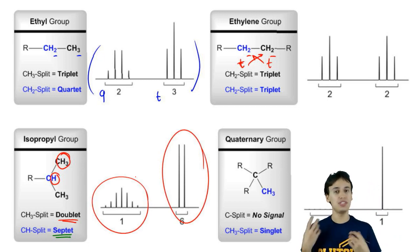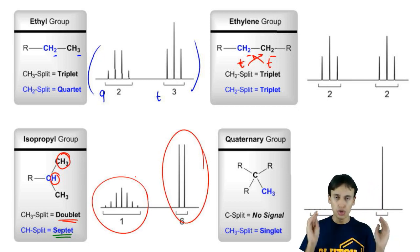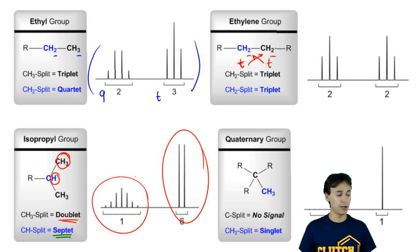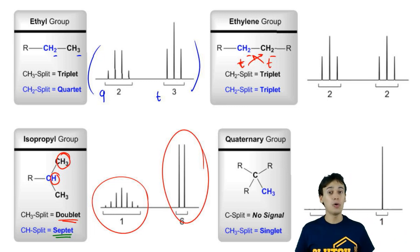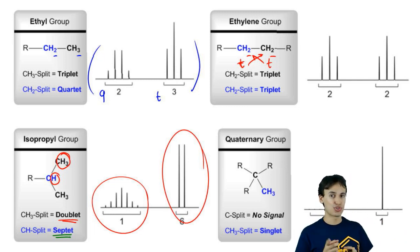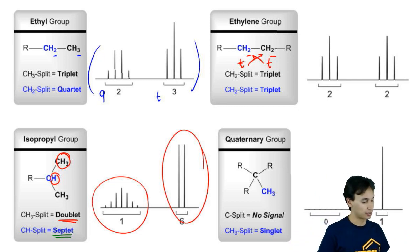If you see a doublet and a septet in the same spectrum, you know for sure that you have an isopropyl group, which can help a lot when it comes to structure determination — a topic that's coming up.